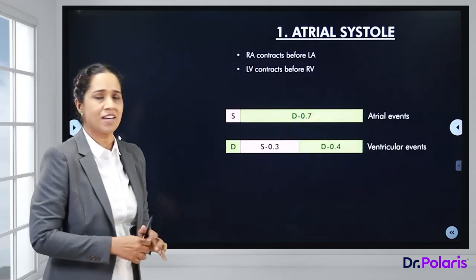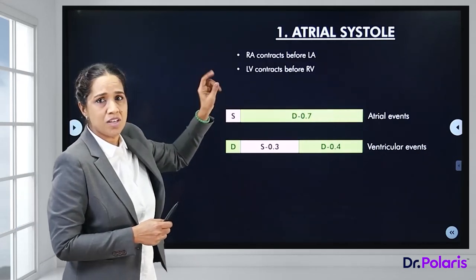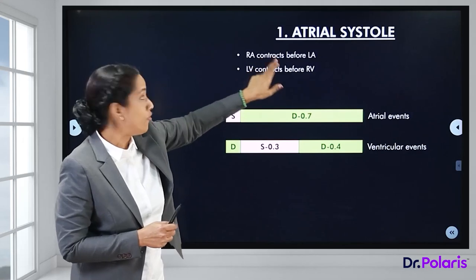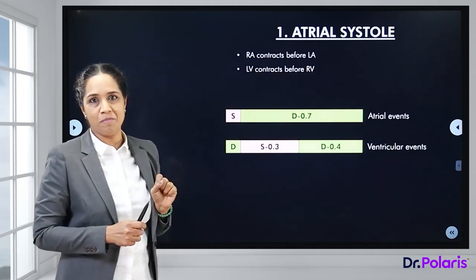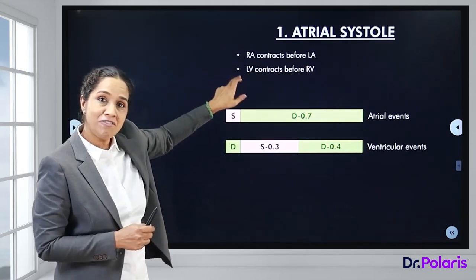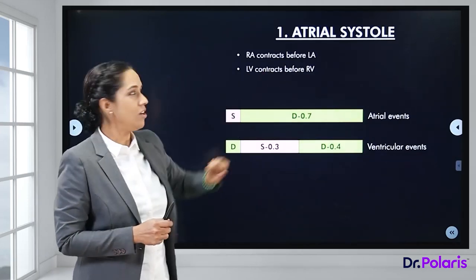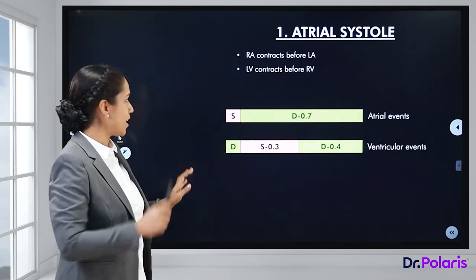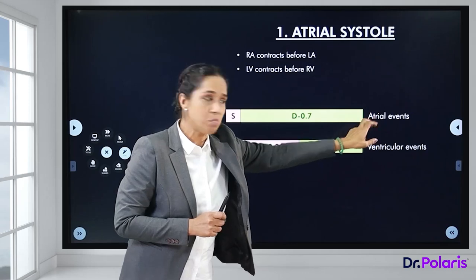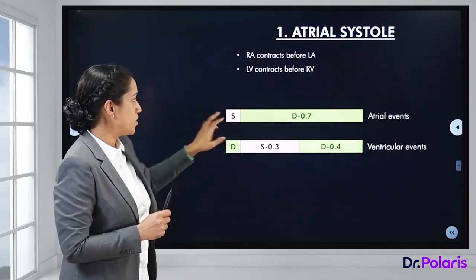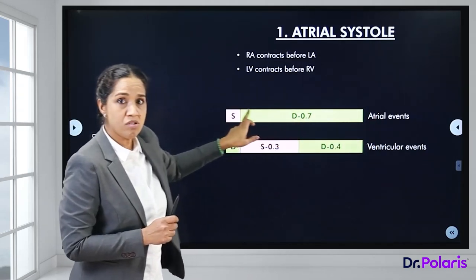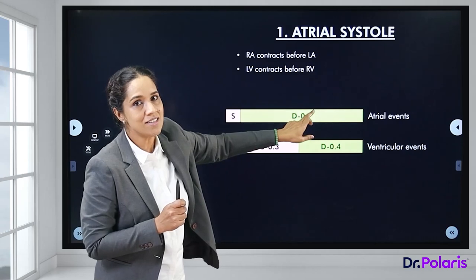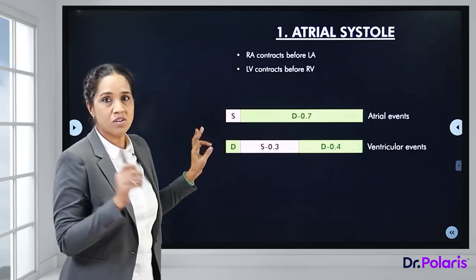An interesting point to keep in mind: the right atrium contracts before the left atrium, whereas the left ventricle contracts before the right ventricle. In a pictorial representation of the cardiac cycle timeline, the atrial diastole takes up 0.7 seconds while the atrial systole takes a very short time.